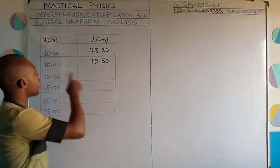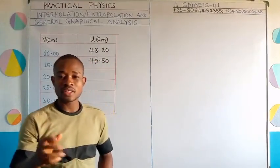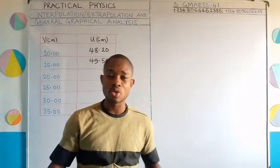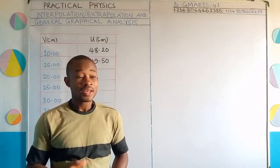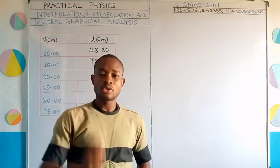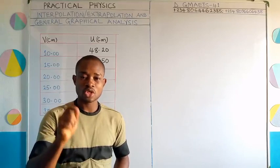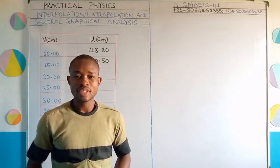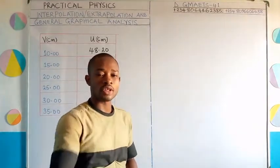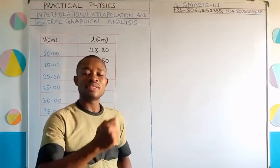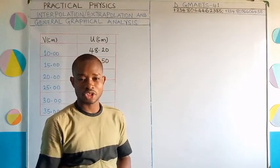We shall also look at general graphical analysis. Now you are done plotting your graphs, there are some things that your examiner may expect you to evaluate from the graph. Interpolation simply means getting the value between two other values, while extrapolation means getting the value outside two other values.